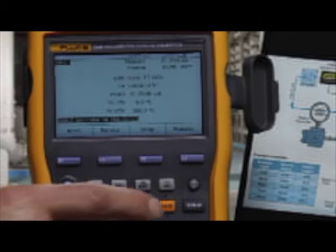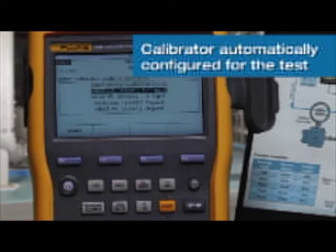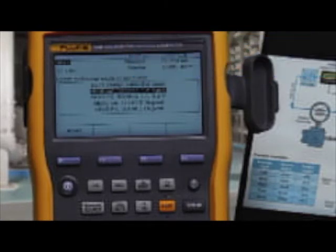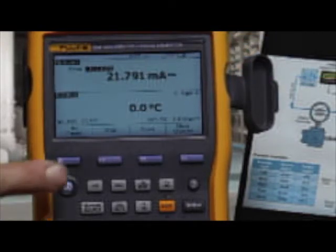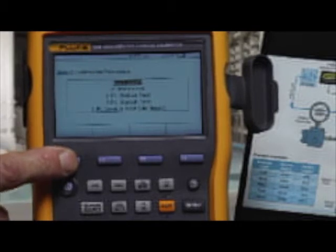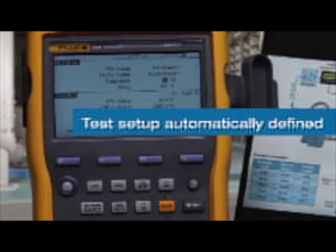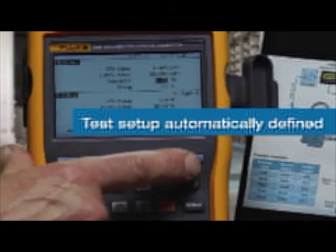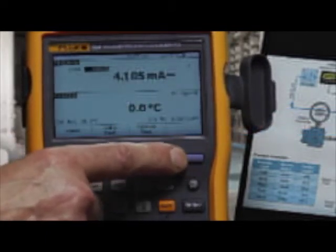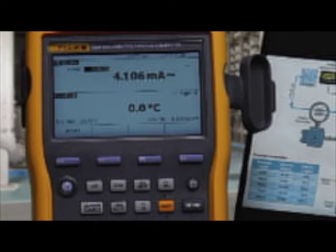To configure it for the test, we'd press HART one more time and select measure milliamps source TC Type-K, and select as found for an instrument. Input the test tolerance and select auto test to document the performance before adjustment.